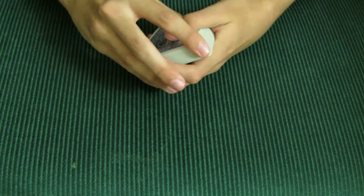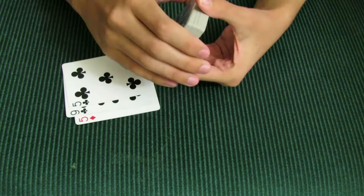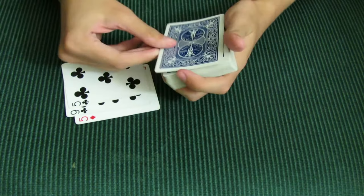Alright, so the first thing you're going to do is showcase the ace and deal down three cards. And what you're doing here is a thing called second deal. So it's going to look like you're dealing the top card, the ace, but you're not.